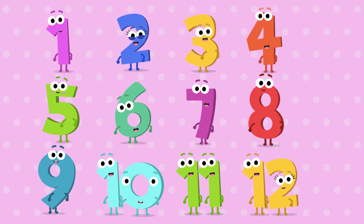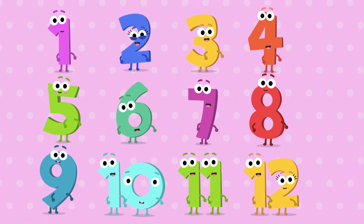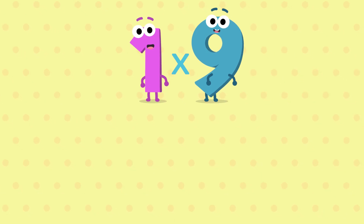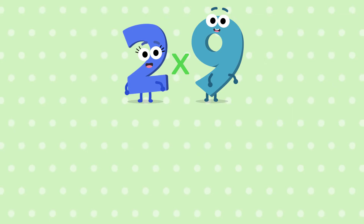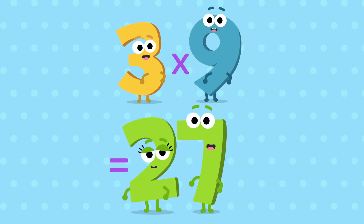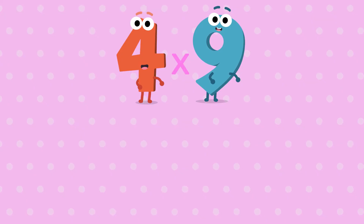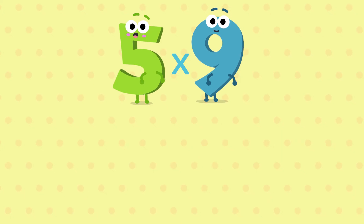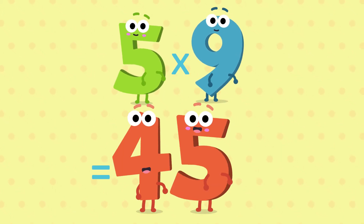12 nines are 108, 1 nine is 9, 2 nines are 18, 3 nines are 27, 4 nines are 36, 5 nines are 45,